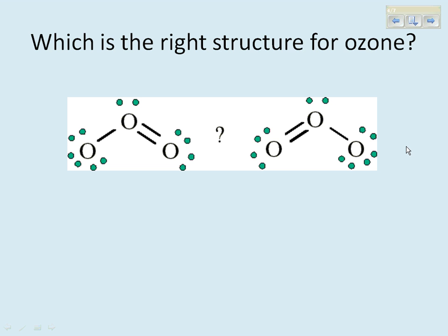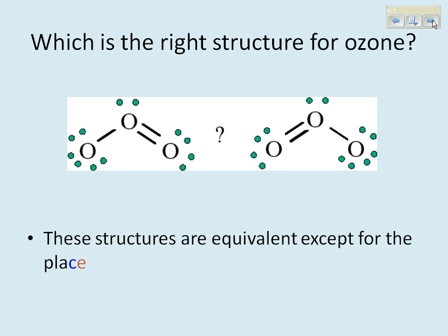So when you draw ozone, you can pick the double bond on the right oxygen, or you can put it on the left oxygen. Which one is right? Well, they're both equivalent, except for the placement of the double bond.